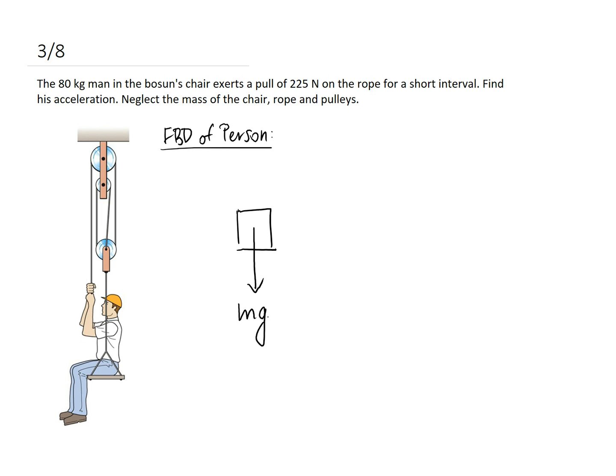Now we're told to neglect the mass of the chair and the rope and the pulleys. So there's going to be no further weight terms on this free body diagram. The only other force comes from the rope which is holding the guy up. The trick to this question is knowing how many tensions we need to put in here.